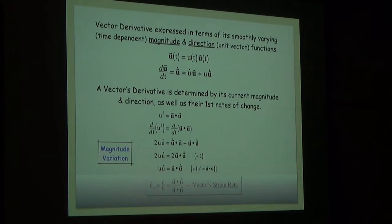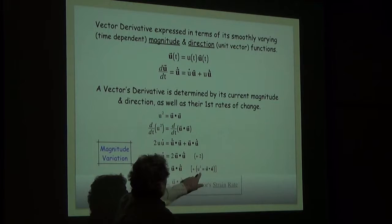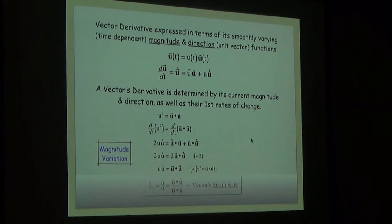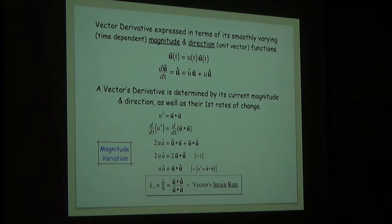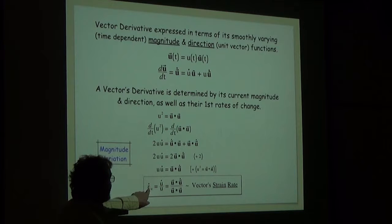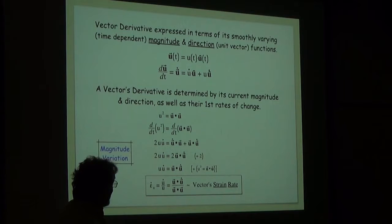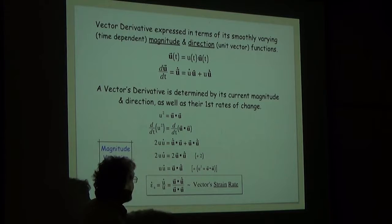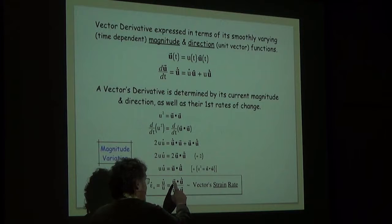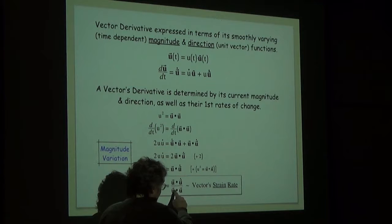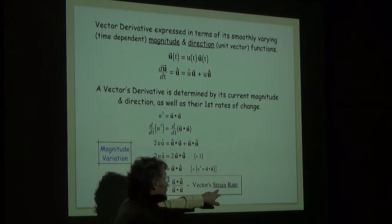If you divide that equation by two and then divide through by the square of the magnitude — or U dot U — we end up with an expression for something called a vector's strain rate. The definition of a vector's strain rate is the vector's rate of change of magnitude per unit magnitude. If you ever need to compute a vector's strain rate, take the vector, compute the vector's derivative, dot those two vectors, and divide through by the square of the magnitude.